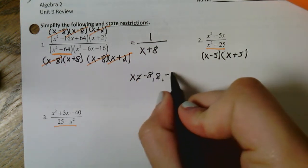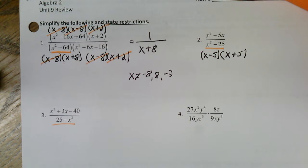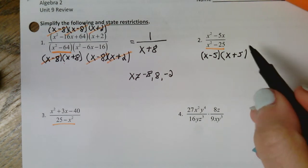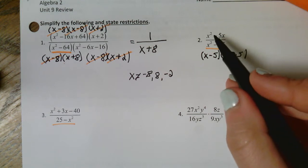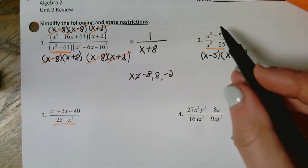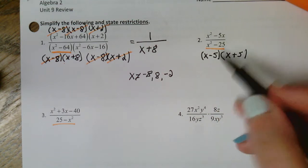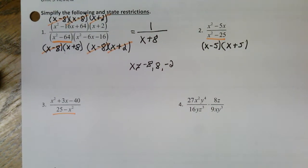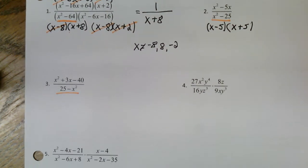You also have to look back at everything you canceled out and account for those restrictions as well. X cannot be positive eight because that would give me zero, and you still have to account for that even if it cancels out. Then you also have the x plus two, so x cannot be negative two. For number two, I'll help you out: look for the GCF — they both have x's, so pull out an x, then factor the rest.